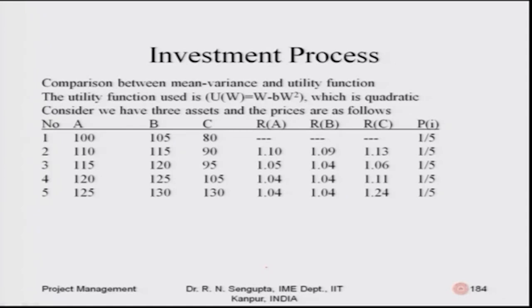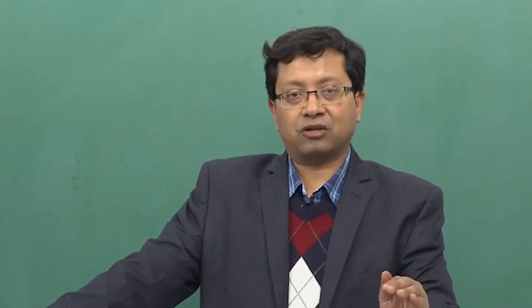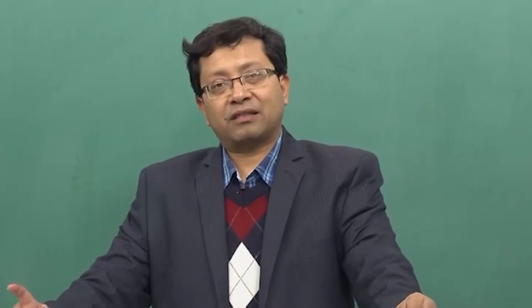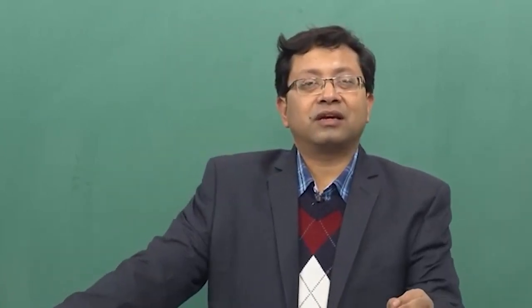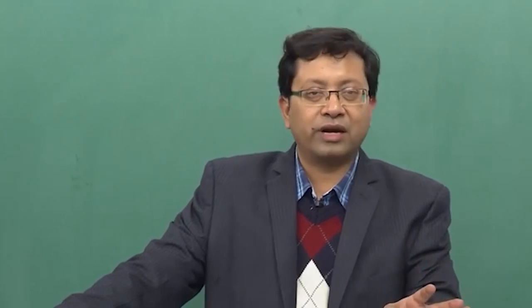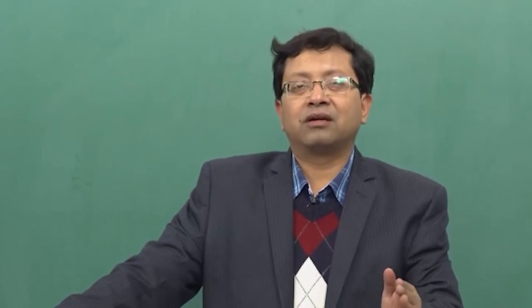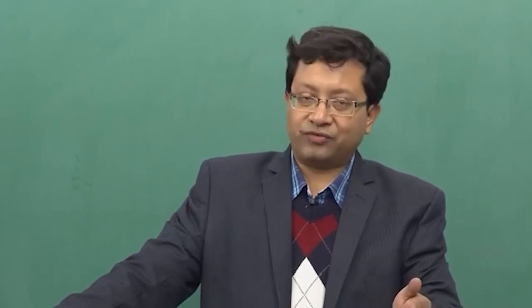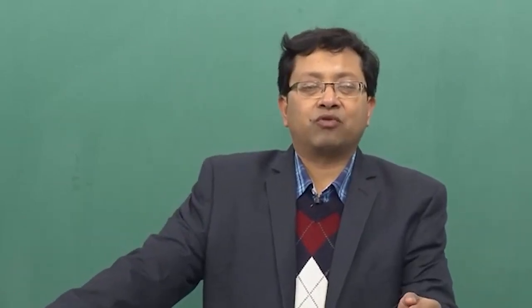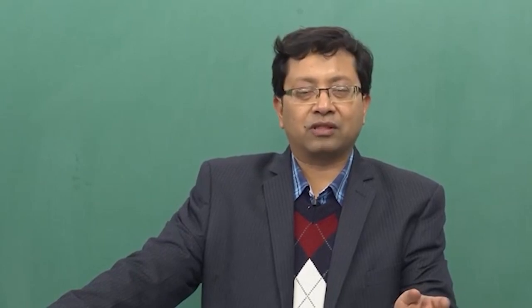Now we come to the comparison between the mean variance concept and the utility concept. Consider the Capital Asset Pricing Model and the linearity of prices. This generally means the return distributions are elliptical in nature. Normal distribution is one such distribution — when we discussed the quadratic utility function, if returns are normally distributed the utility function is quadratic and vice versa. The mean variance theorem was the pioneering work done by Markowitz, for which he won the Nobel Prize.